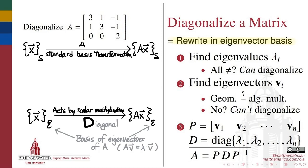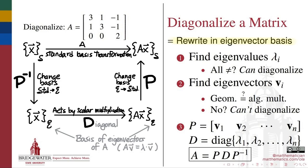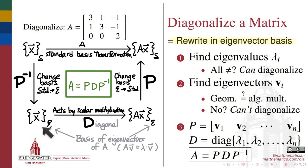To relate this to its standard basis expression, we just need a matrix capable of changing a basis back and forth from the basis of eigenvectors to the standard basis. If we call that change of basis matrix P — which takes us from the eigenbasis to the standard basis — then P inverse can do the opposite. This commutative diagram suggests that matrix A equals the result of first applying P inverse to change basis from standard to eigenvector, then acting by the diagonal matrix D, then using P to change back to the standard basis. So A equals P times D times P inverse.